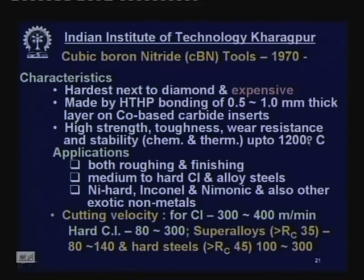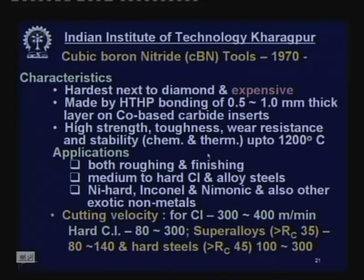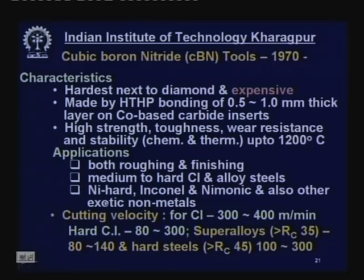CBN's thermal and chemical stability enables machining with no rapid wear, and delivers excellent finish, accuracy, and surface integrity — no residual stress, no burning. The same tool can be used for both roughing and finishing simultaneously, giving large depth of cut for bulk material removal and finishing in one stroke. Medium to hard cast iron, alloy steels, Ni-hard, Inconel, and other nickel-based superalloys — exotic materials difficult to machine with other cutting tools — can all be machined by CBN.